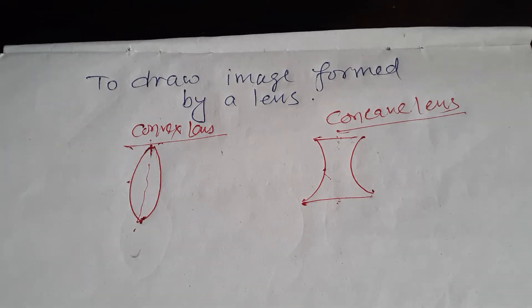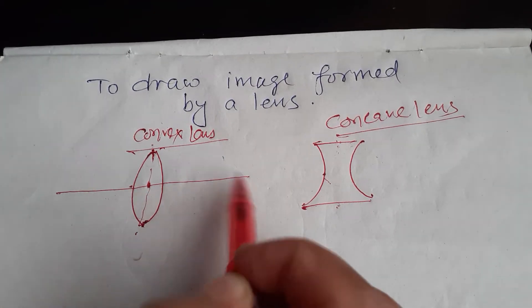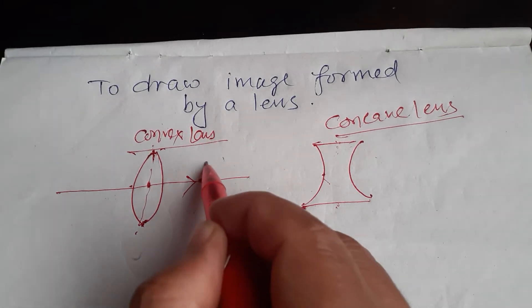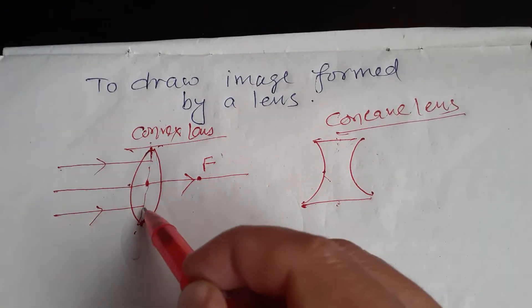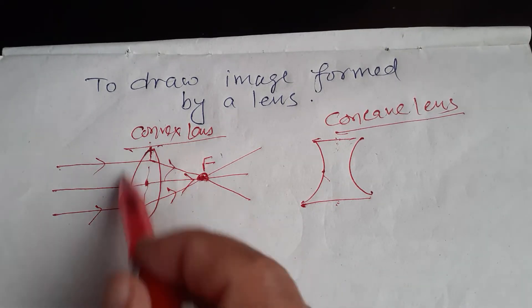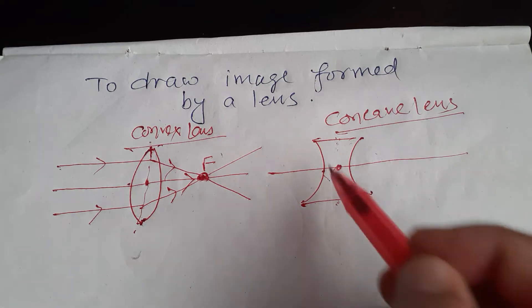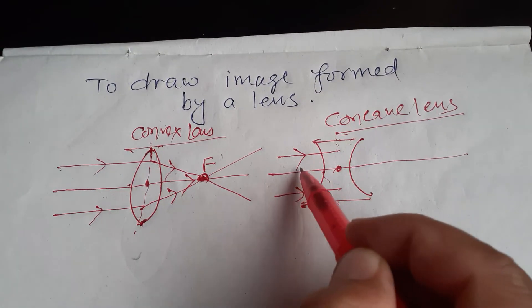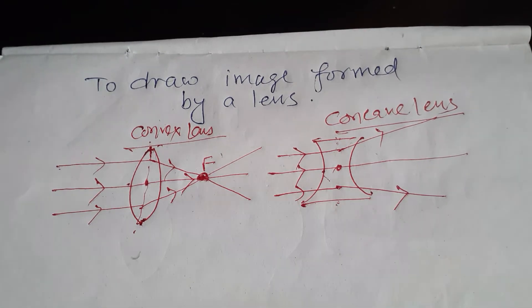Convex lens is known as converging lens because it converges the light rays. Suppose this is a principal axis and F is a focus — the light rays coming from the object converge to a point F. Similarly, in a concave lens, the light rays coming from the object and parallel to the principal axis diverge. So concave lens is also known as diverging lens.